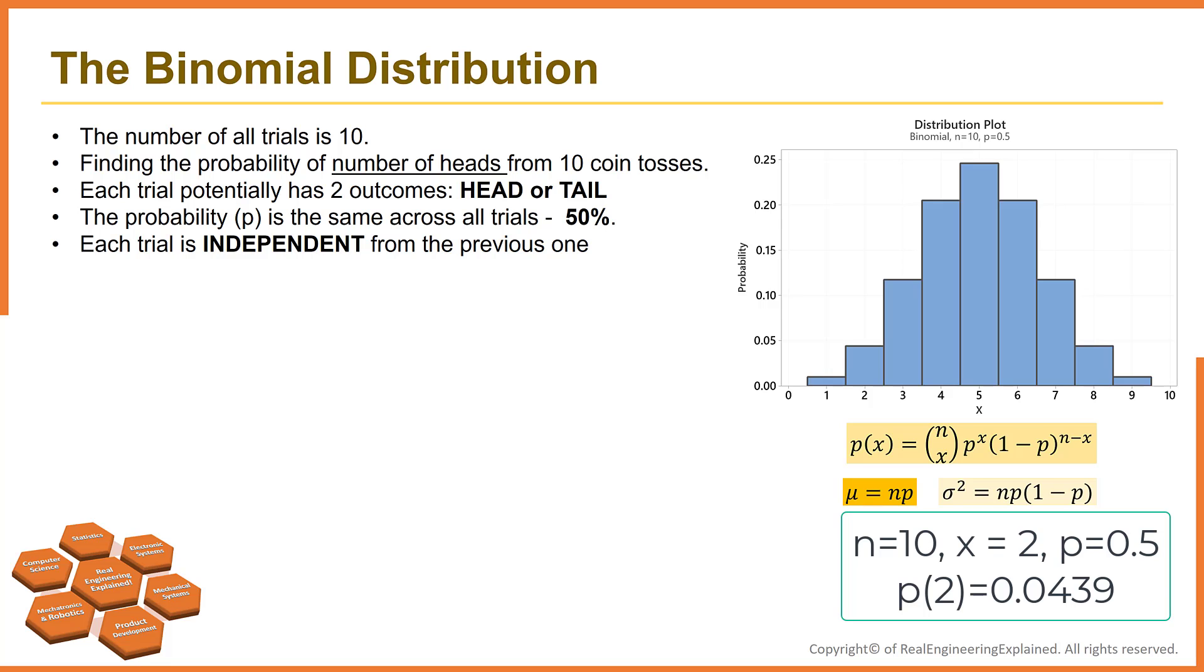In n trials has the binomial distribution and can be computed with this equation. So let's plug in 2 instead of x, and 10 instead of n, and 0.5 instead of p. The result will be around 4%.